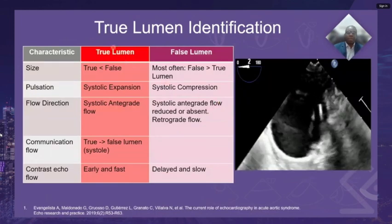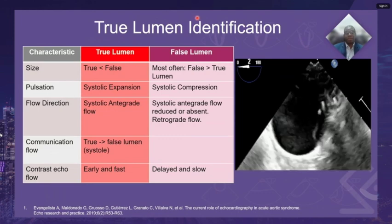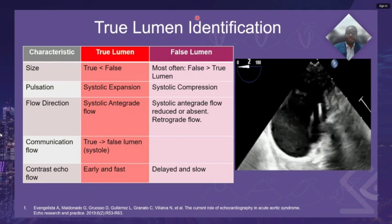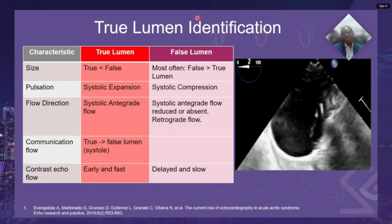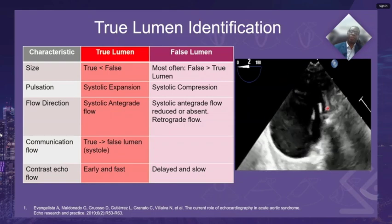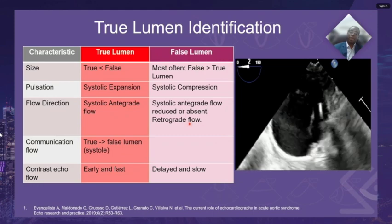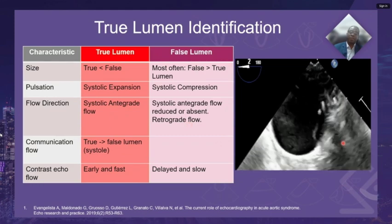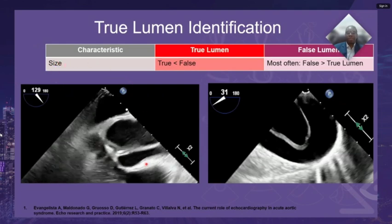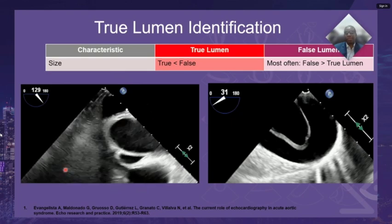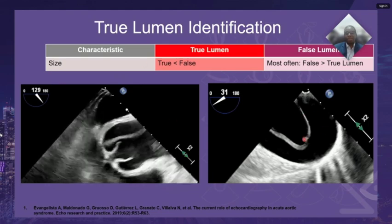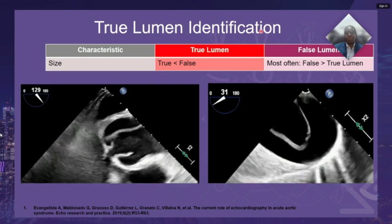After identification of a dissection flap, it is crucial to differentiate the true from the false lumen, which may provide useful guidance to the surgical team. For example, a surgical plan may change considerably depending on whether the supra-aortic vessels originate from the true or false lumen. The true lumen may be identified as the lumen wholly consistent with efflux from the aortic valve during systole, and it will often appear smaller in size than the false lumen, sometimes surrounded by the false lumen.